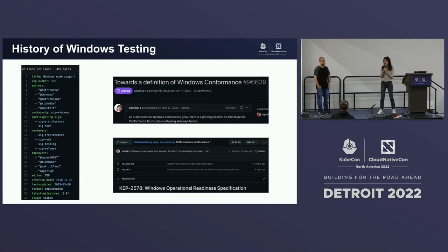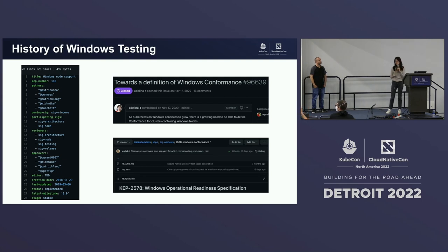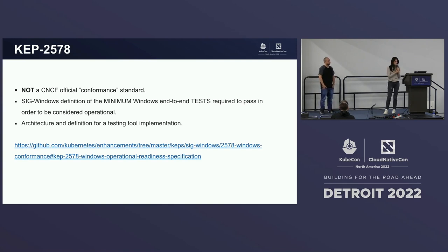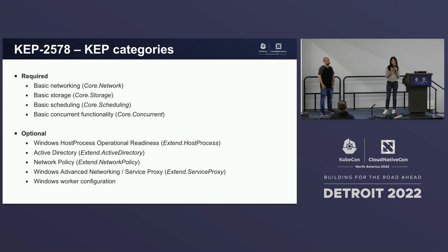Looking at the history of Windows testing, the first version was created in 2018 called Windows node support. In 2021, there was a discussion toward Windows component testing, and folks from SIG Windows and SIG Testing defined the Windows operational readiness KEP, which is what we're talking about today. In this KEP, they define the minimum capabilities required for a cluster to be considered operational. There are nine categories in this KEP. The first four categories are required because they test the core business functionality of the cluster.